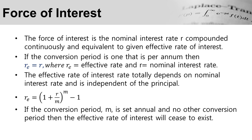The force of interest is the nominal interest rate compounded continuously, and it is equivalent to a given effective rate of interest. For example, if the conversion period is one per annum, then the effective rate of interest equals the nominal interest rate R percent. The effective rate of interest totally depends on the nominal interest rate and is independent of the principal, which is why we don't have P in this formula.